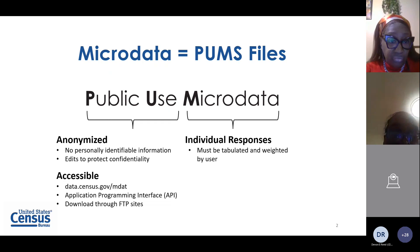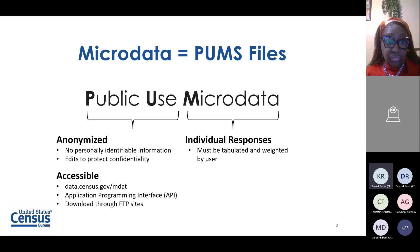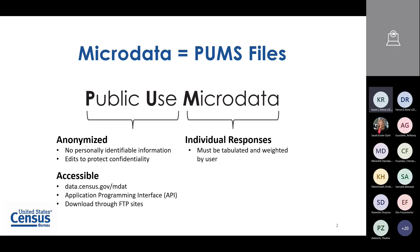First up is PUMS — Public Use Microdata. Public use means it protects your confidentiality, as opposed to straight internal microdata. It doesn't have PII attached to it and has been edited for confidentiality. It's accessible publicly through data.census.gov/MDAT and also our microdata API.